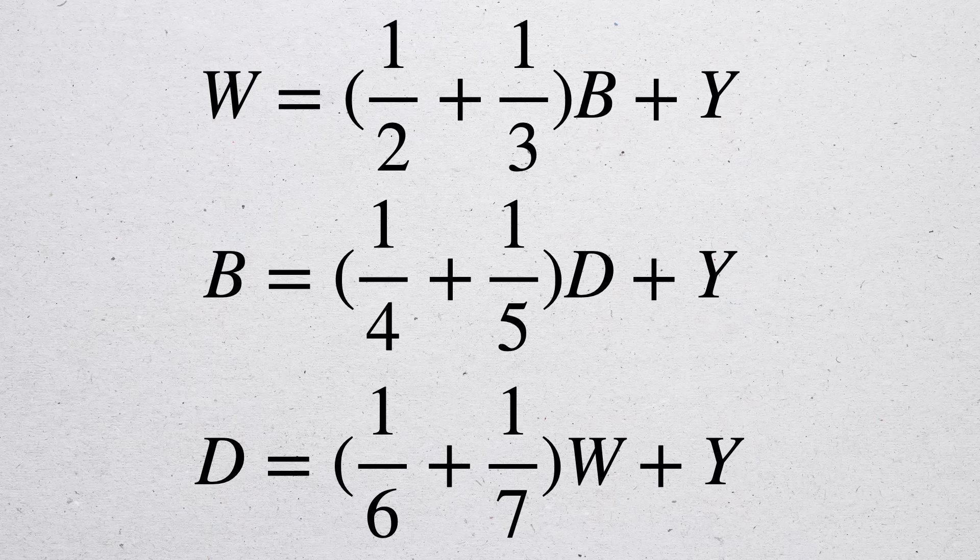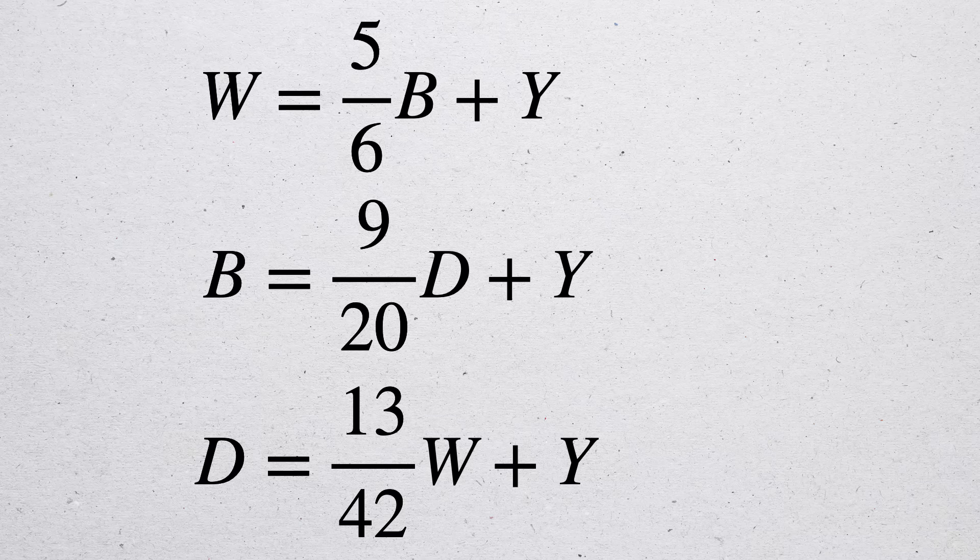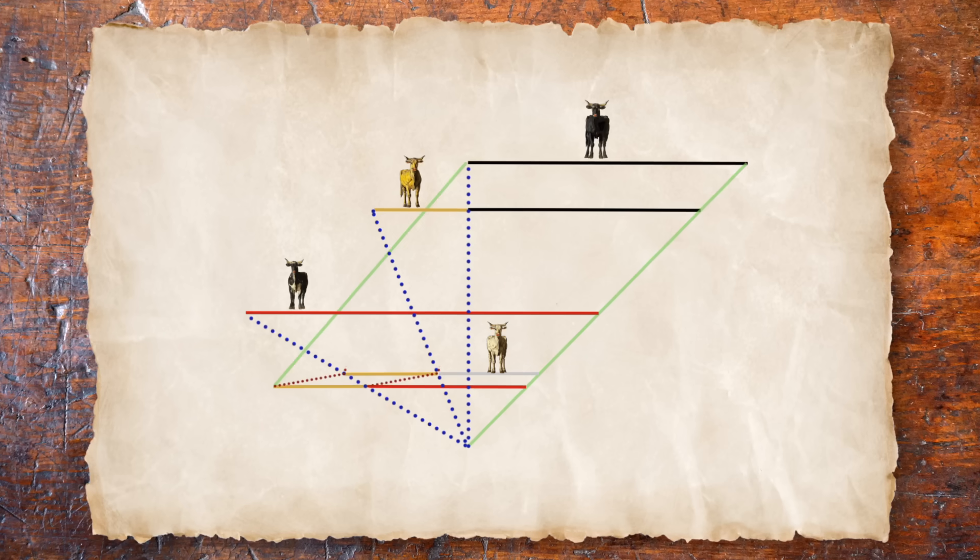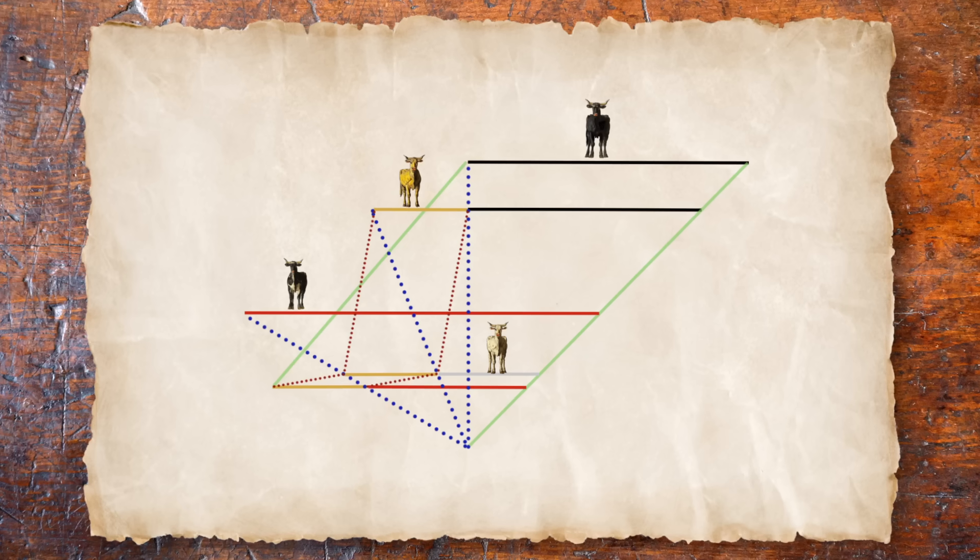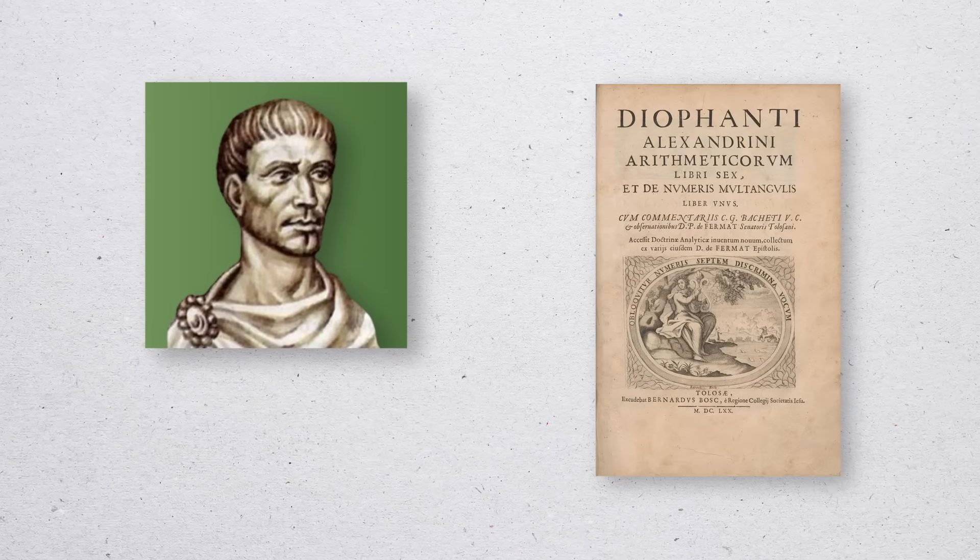So far, this isn't so bad. Using a calculator and the modern tools of linear algebra, we can solve this in seconds. But even the ancient Greeks would have had ways to do this. There was an elaborate geometric method that was probably in use at the time, and a couple centuries later, the mathematician Diophantus recorded a method that looks a lot like a precursor to algebra.